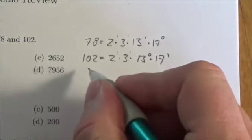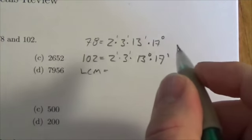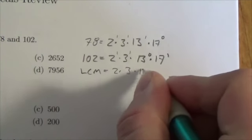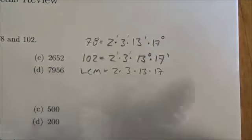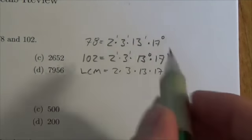My least common multiple is going to be a number that has those same factors in it, but the least common multiple is going to be the one with the largest exponent of them.